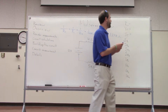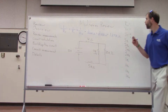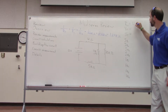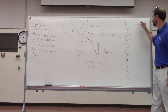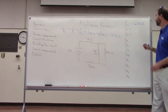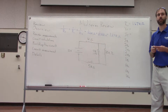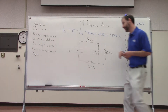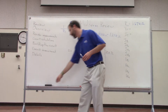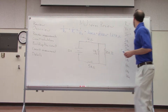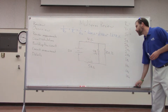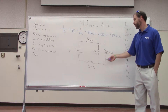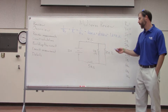Up here we can write that R_total equals 1.67 kilohms — that's just the equivalent resistance of these two resistors in parallel.